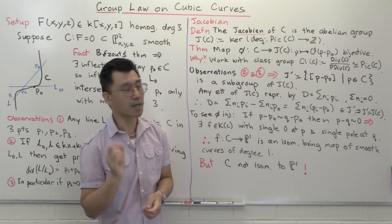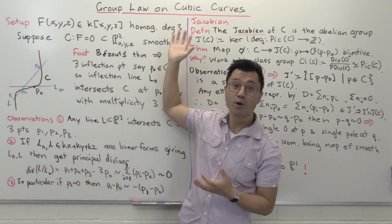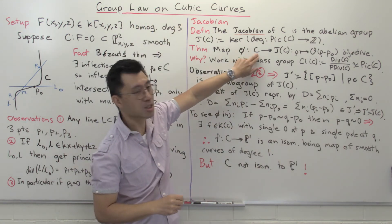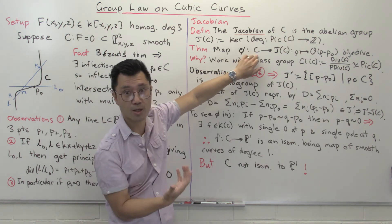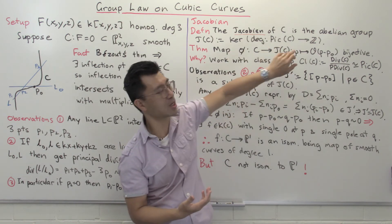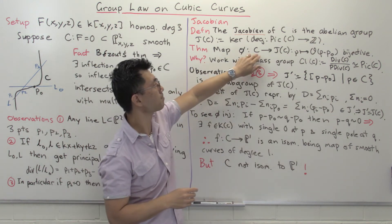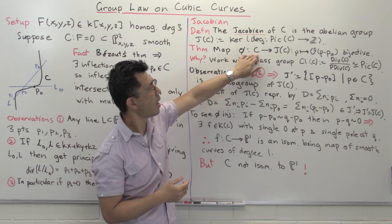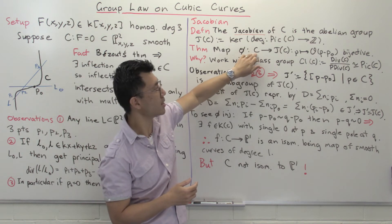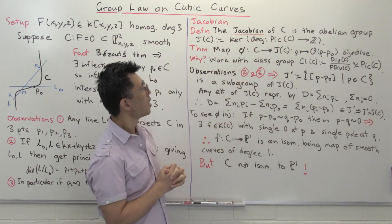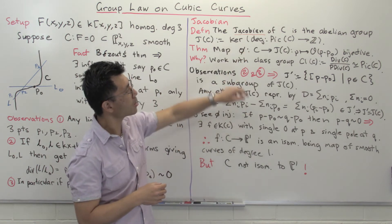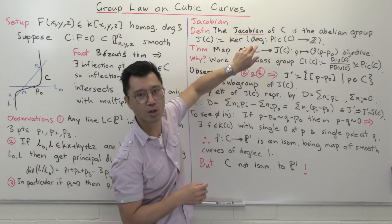The second point — and this comes back to how I motivated this video — is the group law on the cubic curve. At the moment, C is just a projective variety: it has geometry but no extra group structure. But J(C) has a group structure, and since this is a bijection, you can pull back the group structure from J(C) onto C, giving you an actual group structure on C. In fact, it's quite computable what this group structure is. What I want to do is briefly tell you how this works, because it's a lovely proof and shows very naturally how you can induce the group structure on this cubic curve.